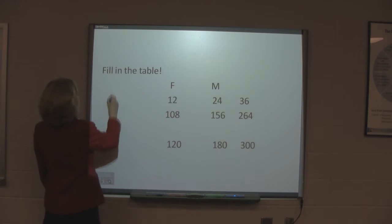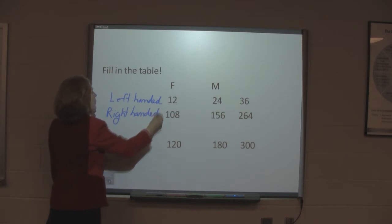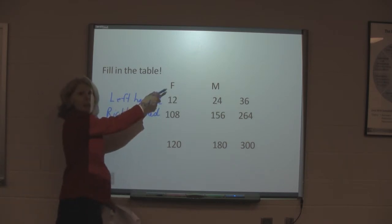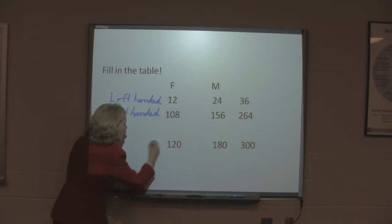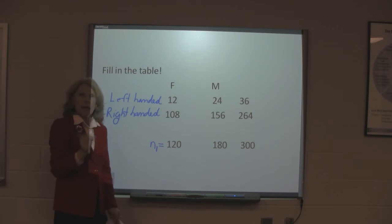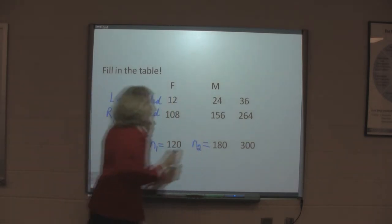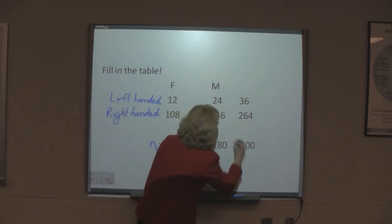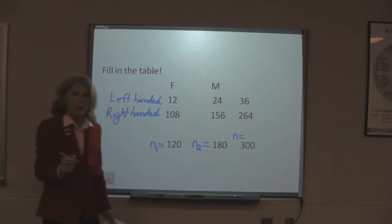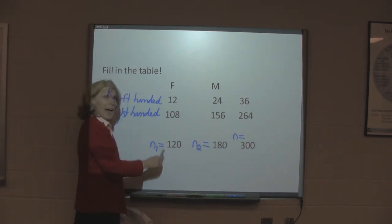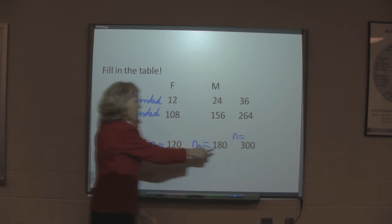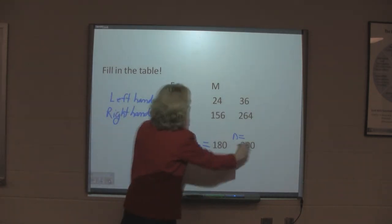So, let's see. We said that the females, we had a sample of 120. So, n sub 1, we said a minute ago, was 120. n sub 2 equals 180. And then, n equals 300. So, n sub 1 plus n sub 2 equals n. And so, this adds across.